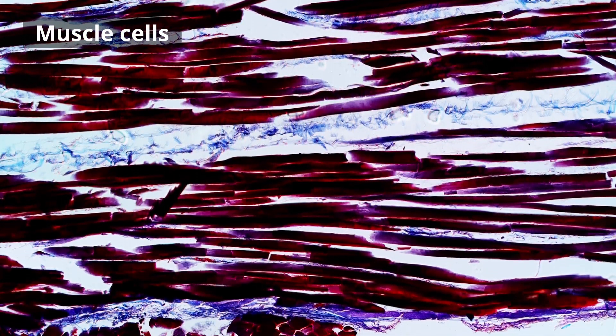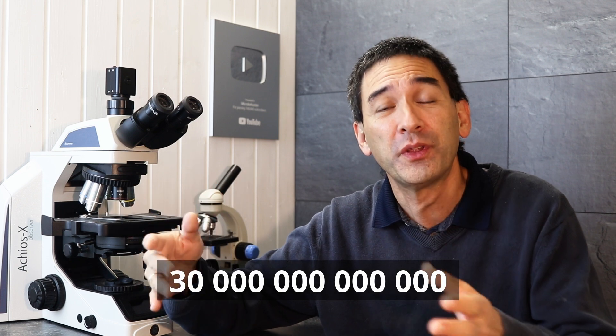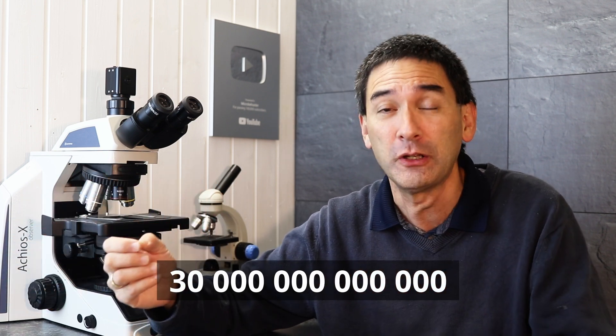There are approximately 30 to 40 trillion cells in an adult human body. That's a huge number - 30 with 12 zeros. It's unimaginably large.